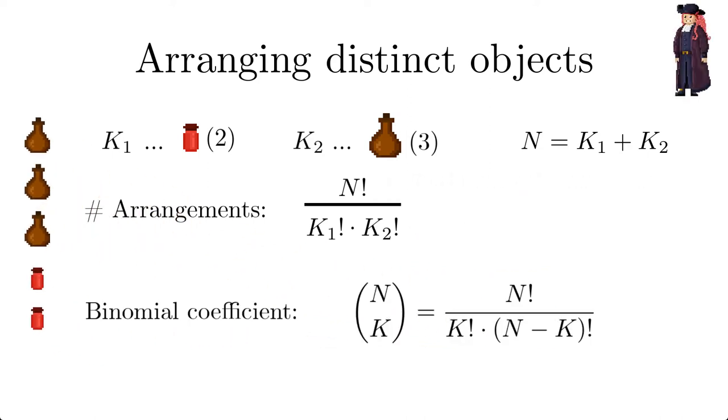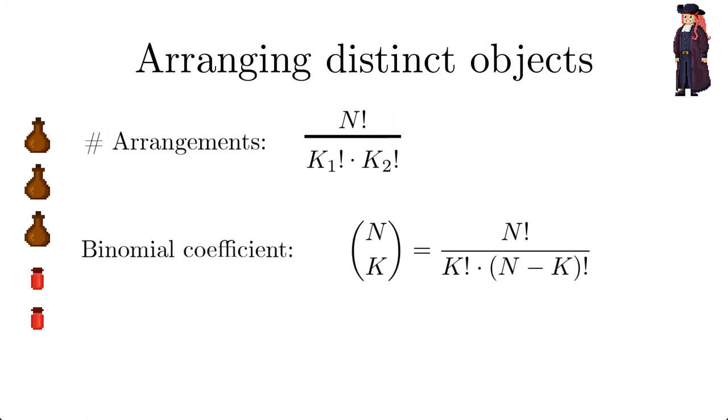This term is called the binomial coefficient. We say n choose k for the number of possibilities to choose k out of n elements. In our example of arranging, choosing corresponds to choosing the positions for the brown bottles. The number of possibilities to arrange three brown bottles and two red jars is thus given by 5 choose 3 equals 10.